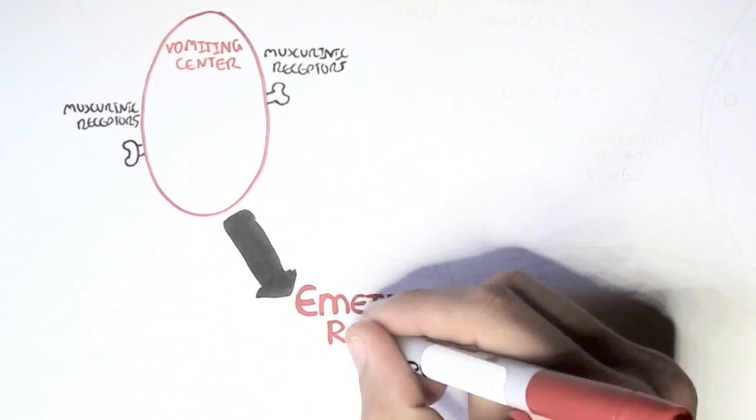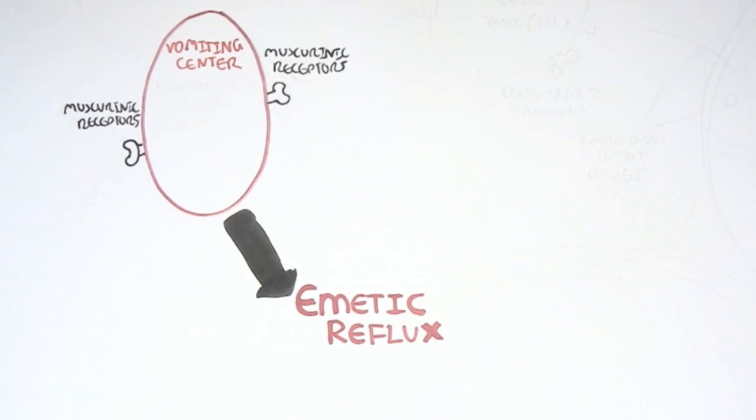The emetic reflex, that is. Note, emetic comes from emesis, and emesis is a medical term to mean vomiting. So essentially it means vomiting reflex. So the vomiting center is what essentially sends out the signals to cause us to vomit from the brainstem.